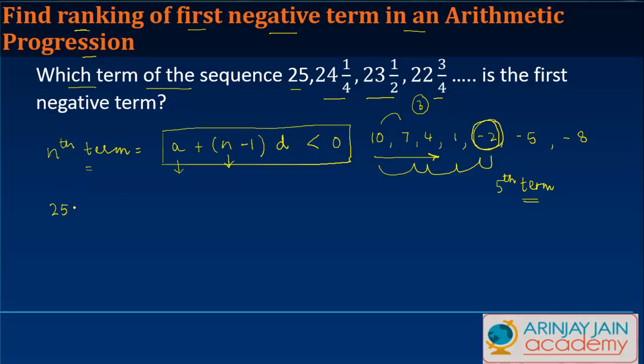(n-1) times d. What is the value of d? d can be found by subtracting the first term from the second one. So we have 24¼, which is 97/4,